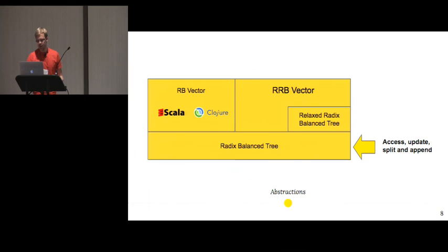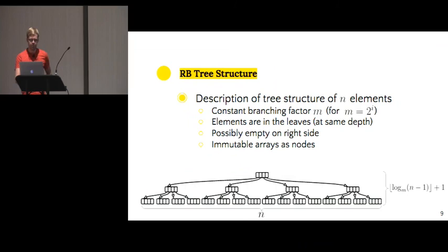So let's focus on how the base tree structure is. So, we basically have, for a tree that will contain N elements, we have a constant branching factor of M, in our case 32. We want to make it as large as possible, where every element is located in the leaf, and all elements are in the same depth. And we will leave it might be possibly empty on the right-hand side, if we don't have all the N elements to fill it. We also use immutable arrays to have a performance on access times and spatial-wise. And we have this logarithmic bound on the tree because of the structure.